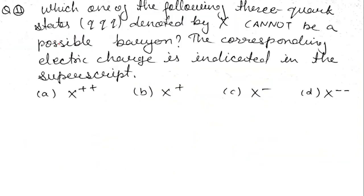Question 11: Which of the following three-quark states qqq denoted by X cannot be a possible baryon? The corresponding electric charges are indicated in the superscript (++, +, −, −−). A baryon is always formed from three quarks (qqq), while a meson is formed from a quark and anti-quark (qq̄).